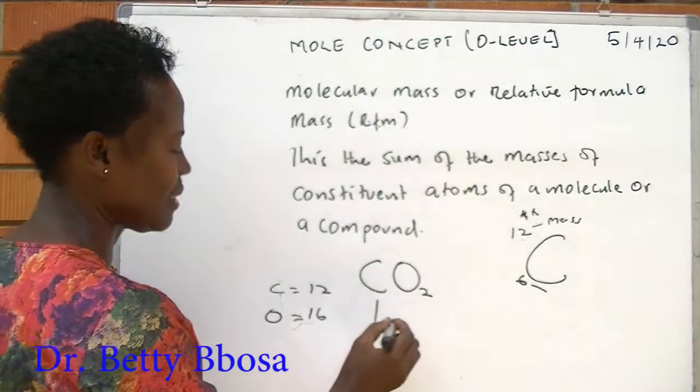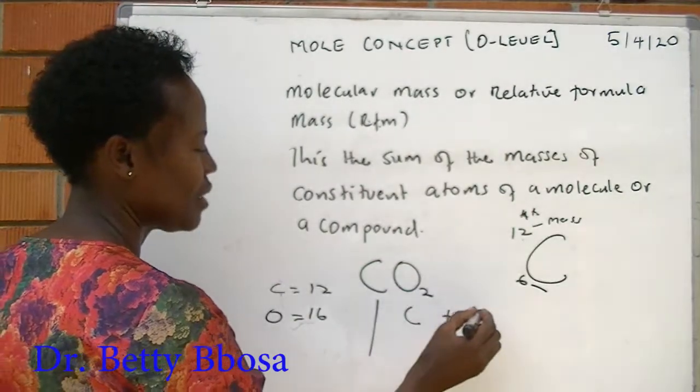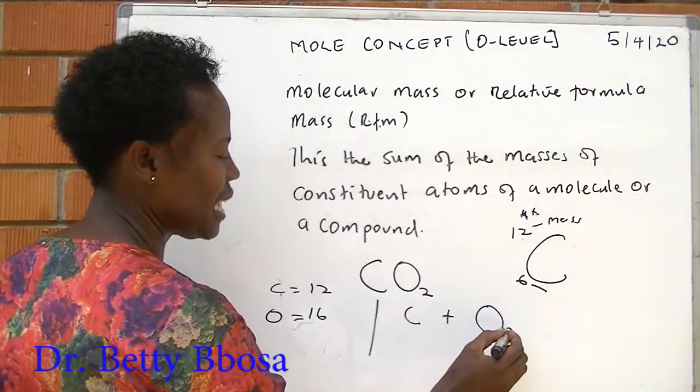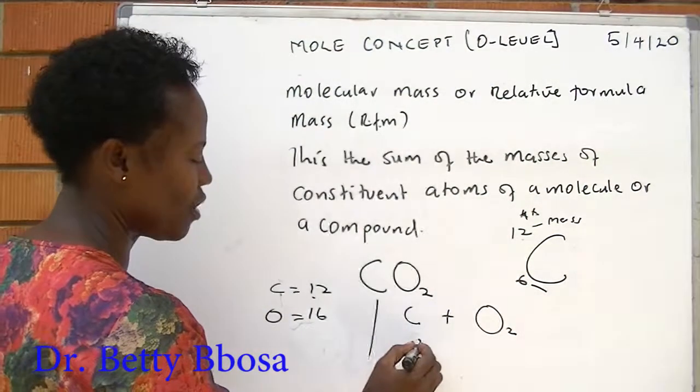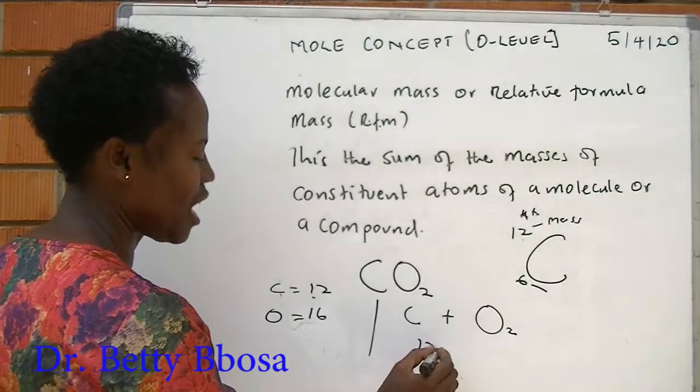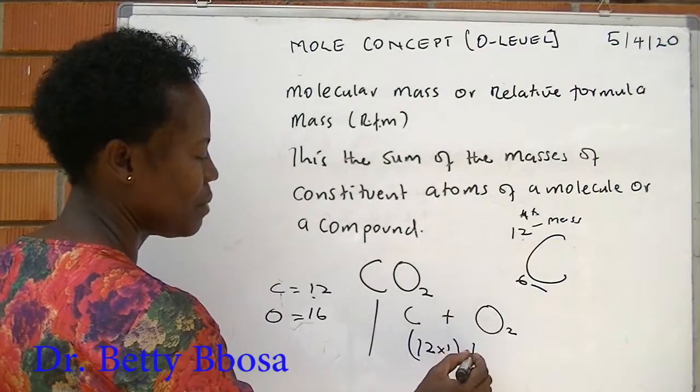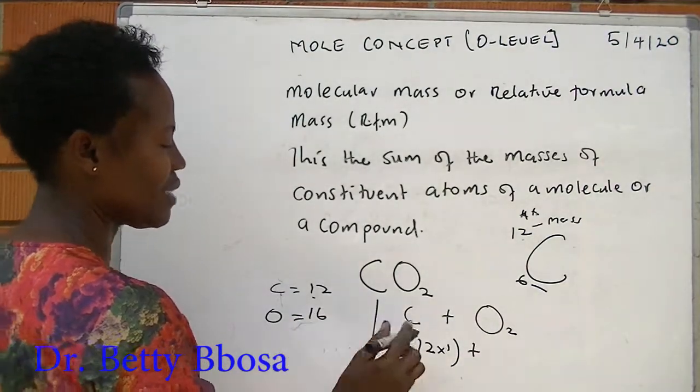This is the same as carbon plus oxygen atoms. But how many are they? They are 2. Carbon is 12. How many atoms do I have? It is only 1. Then plus oxygen is given to us as 16, and how many oxygen atoms? They are 2.